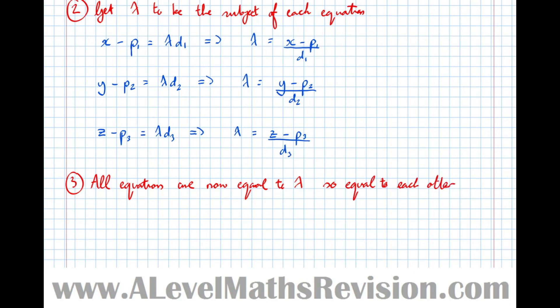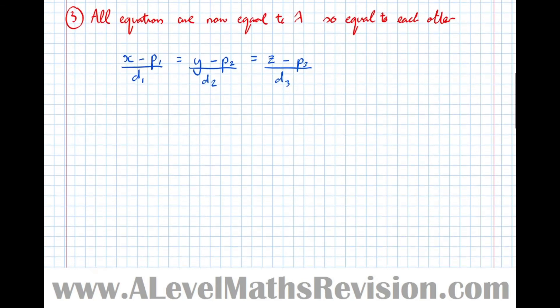All of them are equal to lambda, so they must all be equal to each other also. So now we have x minus p1 over d1 equals y minus p2 over d2 equals z minus p3 over d3, and that's the Cartesian form of the original vector equation. So let's now put them next to each other and analyze what we've just found.